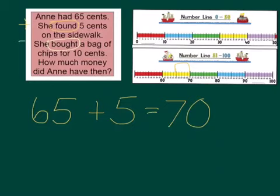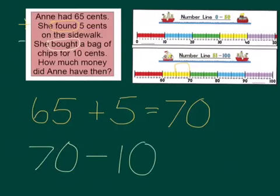So now, Anne after finding 5 cents has got 70 cents altogether. Now, she's buying a bag of chips for 10 cents. So she's got 70 and she's buying something. So we're going to take away and it costs 10 cents.